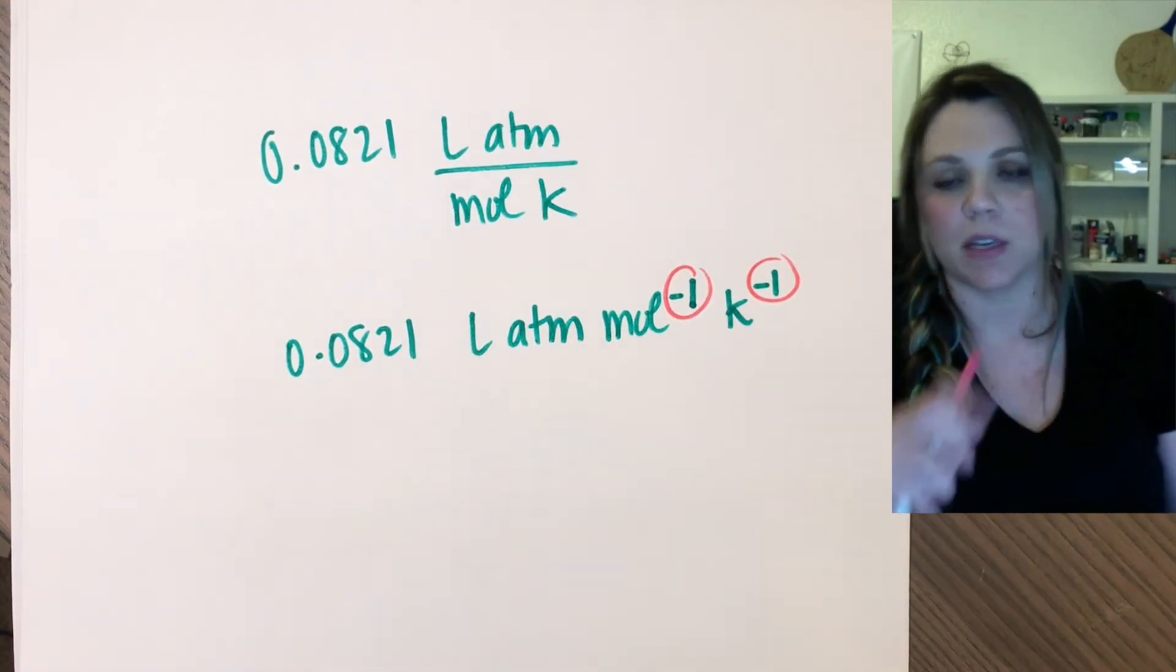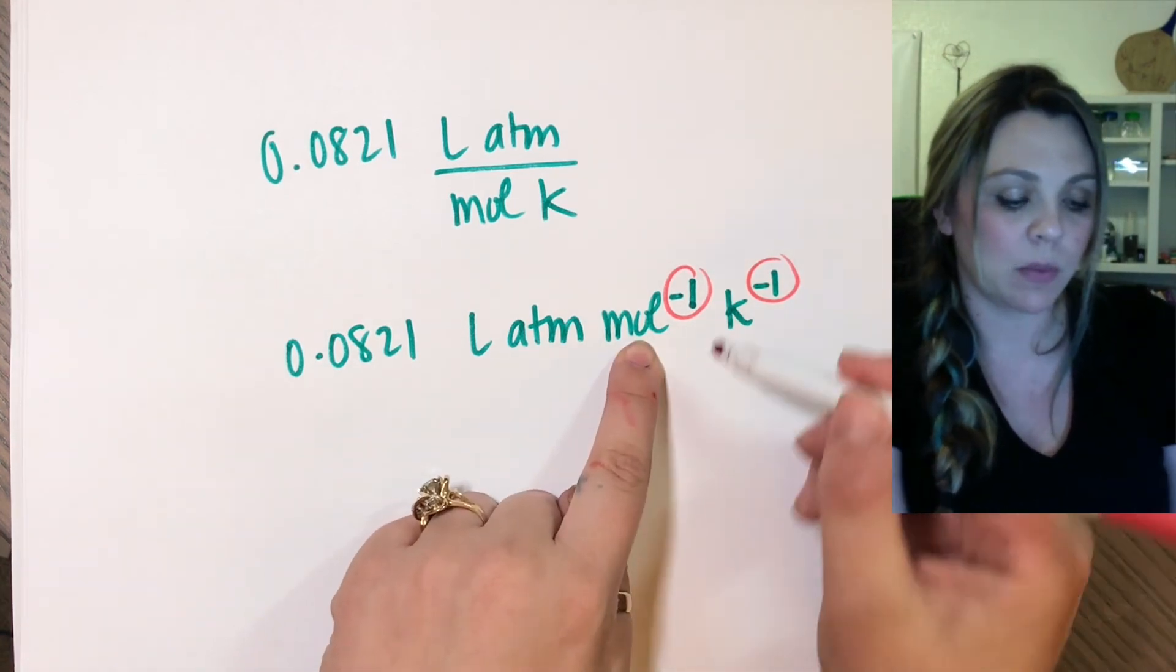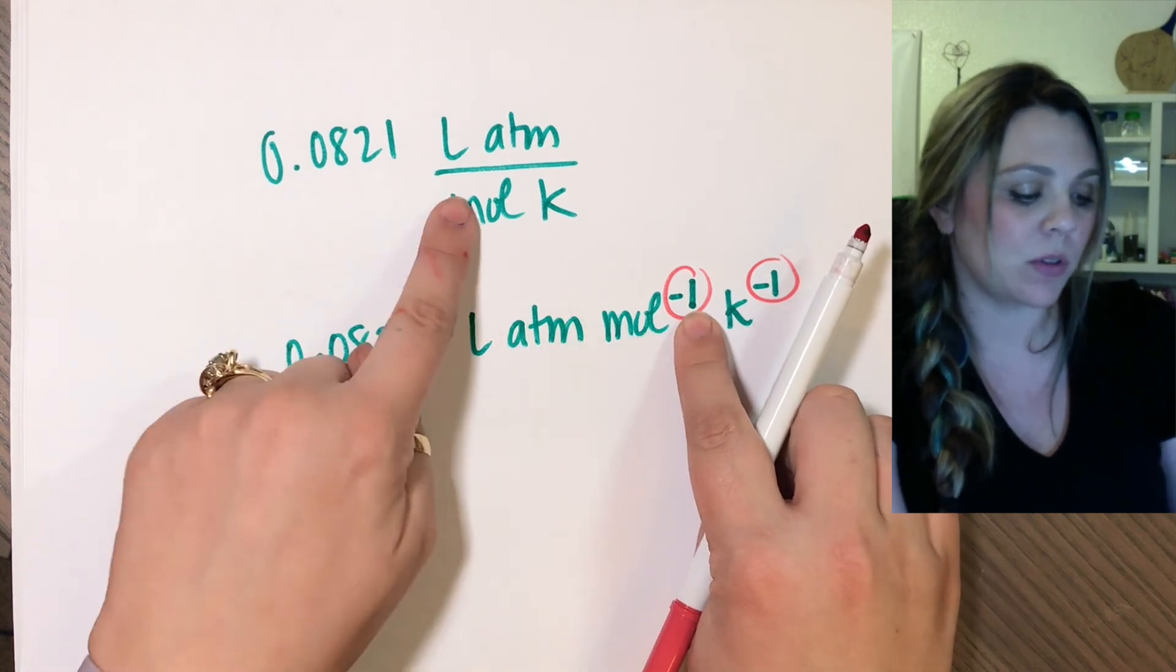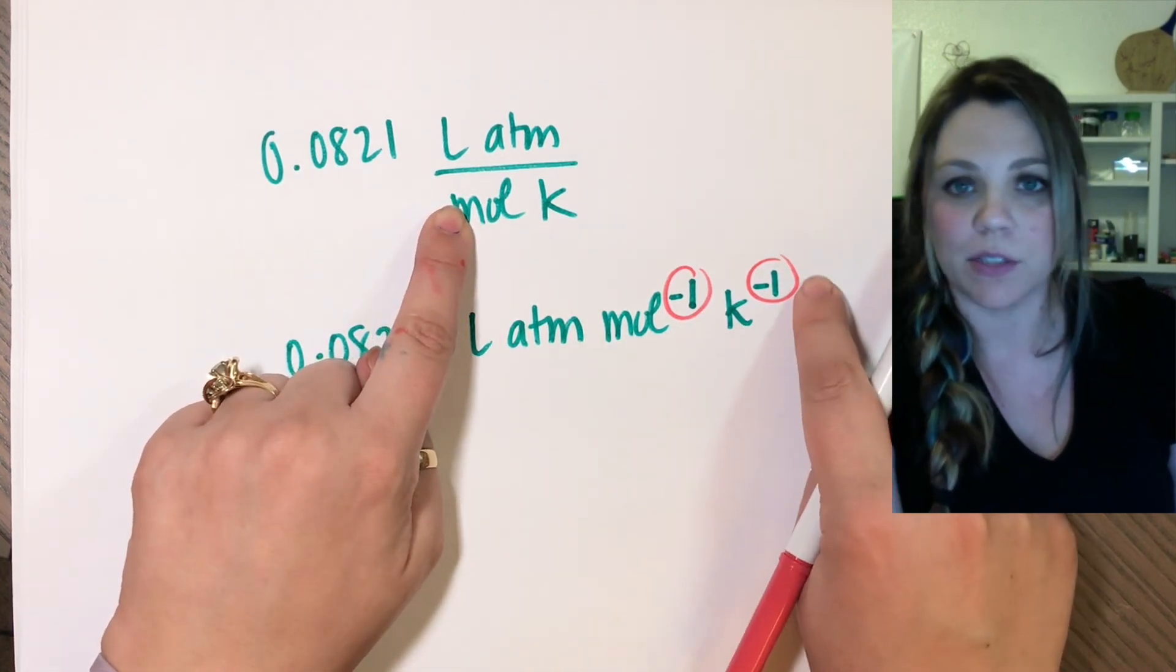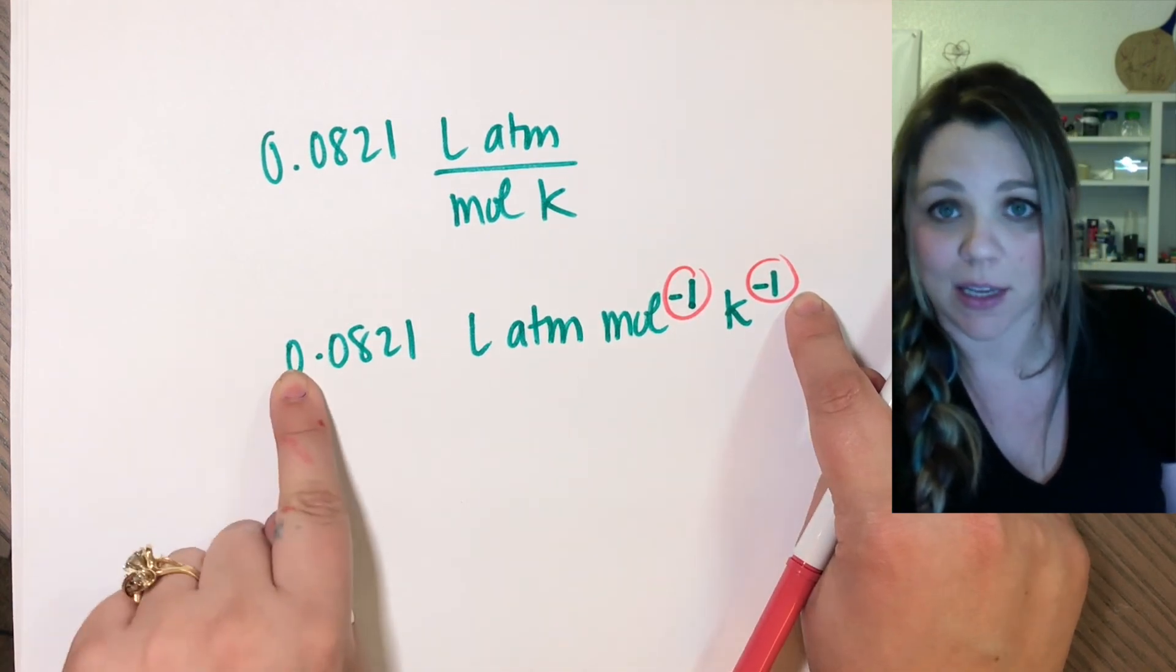they were just typing it so it would all stay on one line of their document. So saying moles to the negative one means that that mole goes on the denominator. Kelvin to the negative one means Kelvin goes on the denominator. They're the same stinking thing.